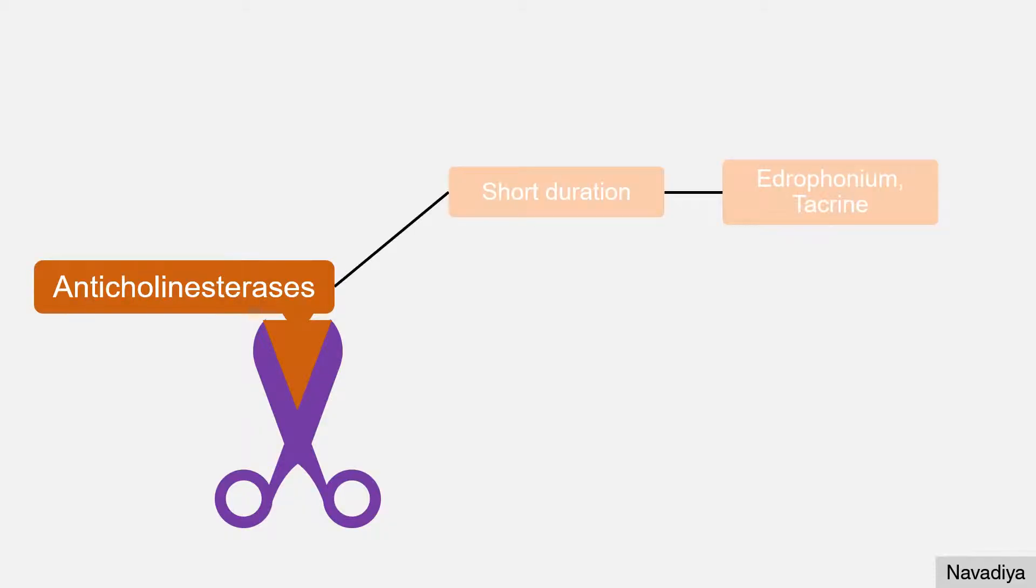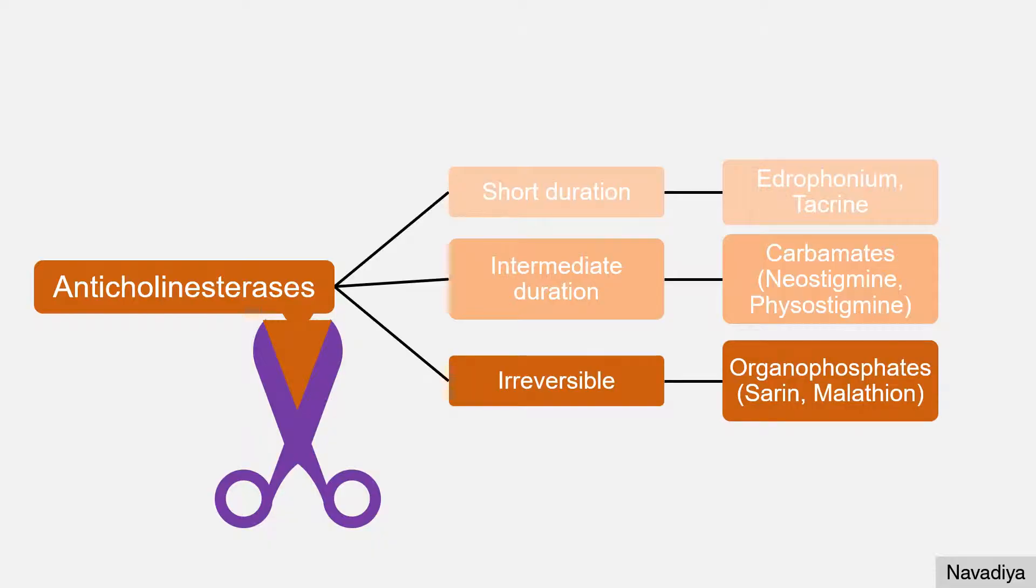Drugs with short duration of action like Edrophonium and Tacrine. Drugs with intermediate duration of action which includes carbamates like Neostigmine and Physostigmine. And irreversible inhibitors, for example organophosphates like Sarin, Malathion, etc.